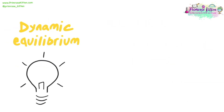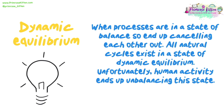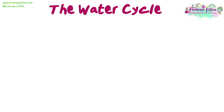Before we take a look at the water cycle, I want to introduce you to a very important term that will be used across the whole environmental science course: dynamic equilibrium. This is when processes are in a state of balance so they end up cancelling each other out. All natural cycles exist in a state of dynamic equilibrium. Unfortunately, human activity ends up unbalancing this state. This is a key term that you need to be adding to your glossaries.